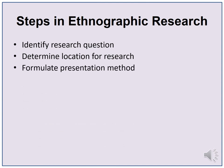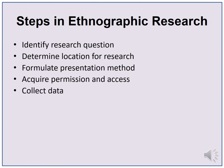The next step is to formulate the presentation method. Consider the most effective way to obtain objective information. Then, acquire permission and access. Because ethnographic research can be a bit intrusive, it is usually necessary to obtain permission for access into the location you plan to research. Always obtain permission in writing. Collect data by using different methods of observation and participation, interviews, or archival data consultation.